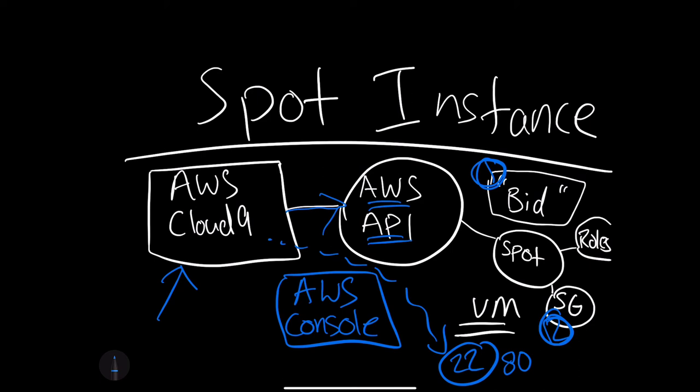In this example, I would want to open up port 22 in the security group, or else I couldn't SSH in. Another component of the SSH mechanism is that you'll have to use a PEM file, and this will be the SSH key that will allow me to connect to that Spot instance.